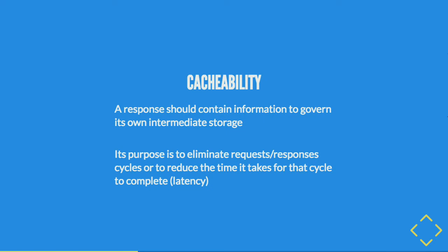Cacheability means your resources have to share information about whether they can be stored for a given period of time — for example, how long a CDN can cache a response, or how long a resource is valid for an offline app. The reason you want things to be cacheable is so you can eliminate requests and responses altogether, because that always has a cost. Even over fiber optic cable, you'll never get below about 100 milliseconds between the US and Europe — it's unavoidable physics. If it's cacheable, you can eliminate those round trips or cache on the edge to lower latency.